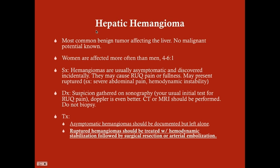Hemangiomas can be quite large and variable in size. When they do rupture, symptoms include sudden severe generalized abdominal pain and hemodynamic instability due to bleeding into the peritoneal space. For diagnosis, this is usually coincidental, but if a patient presents with right upper quadrant pain, the obvious test is a right upper quadrant ultrasound. You may see a mass in the liver on the sonogram, which raises suspicion for a benign or malignant tumor.